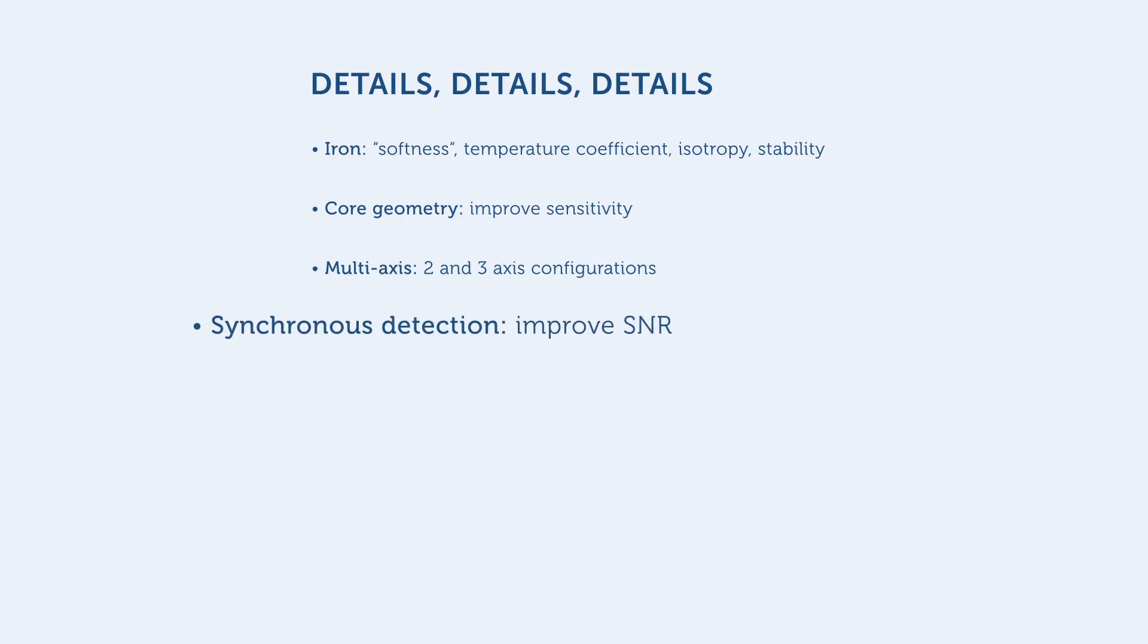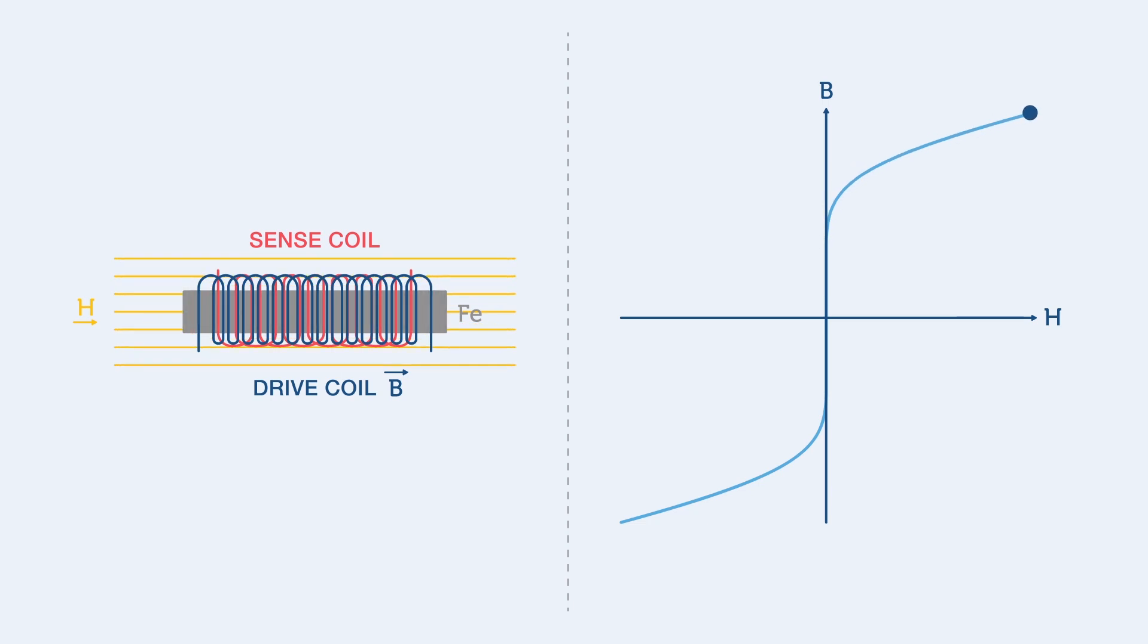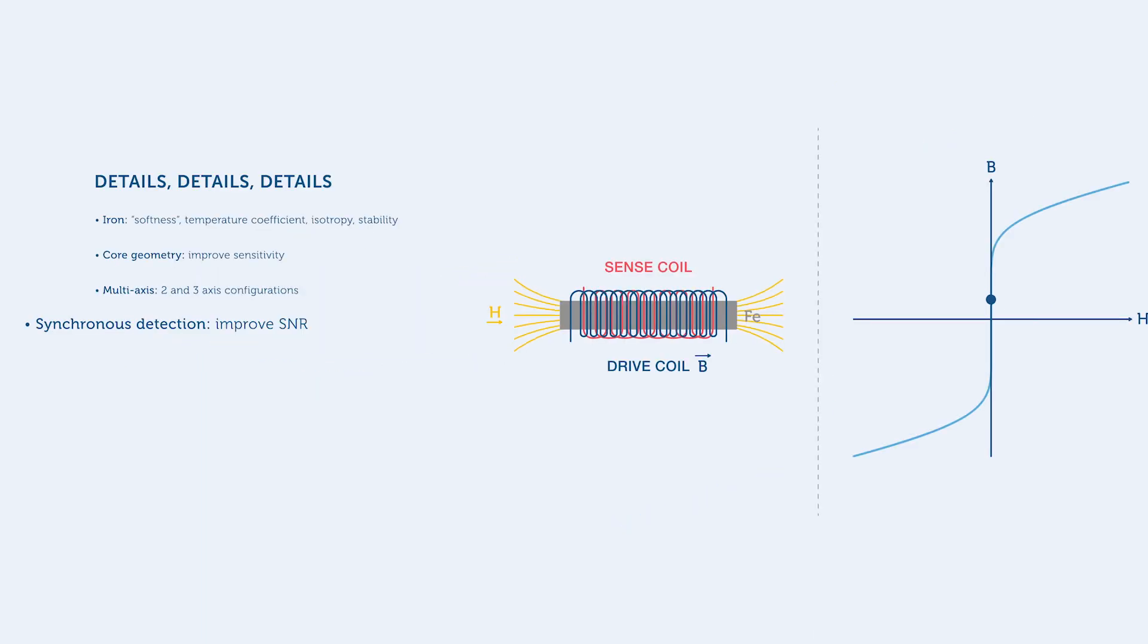Synchronous detection is a technique that significantly improves the signal-to-noise ratio. We know that for every cycle of the drive voltage, we expect to see two measurement signals in the sense coil, once for the positive saturation and once for the negative saturation. We can therefore reject signals that don't occur at the right frequencies as being noise.